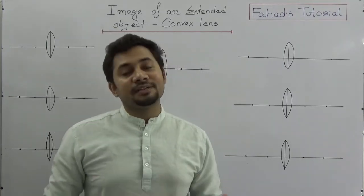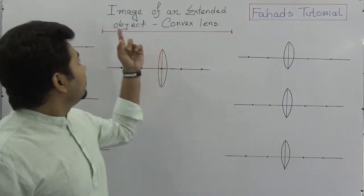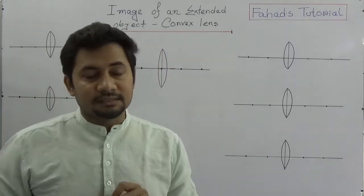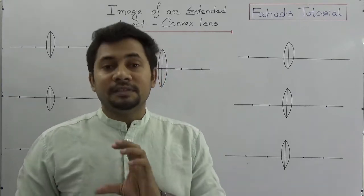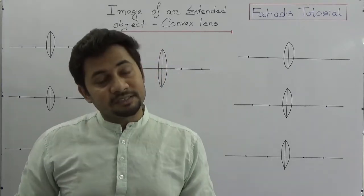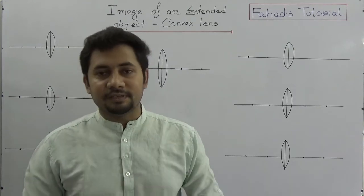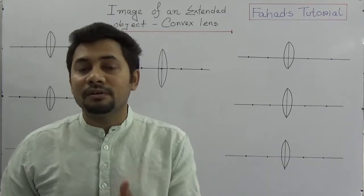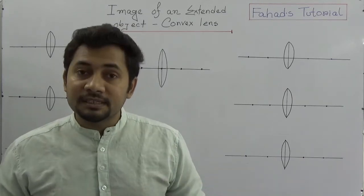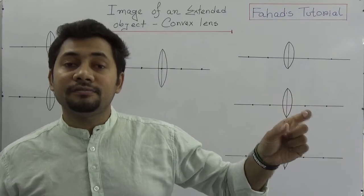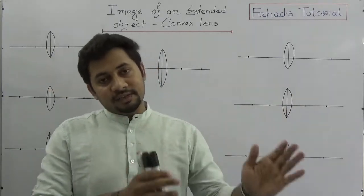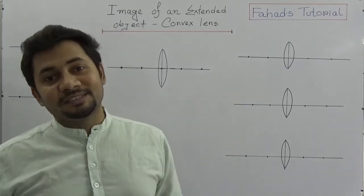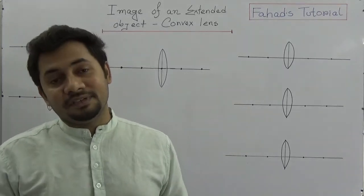Assalamu alaikum warahmatullah. In this tutorial I am going to explain the image of an extended object in convex lens. In my previous video I explained the descriptions of an image formed in concave lens. This video is about the convex lens. The rule of six that is applicable in case of concave mirror also applies to the convex lens.